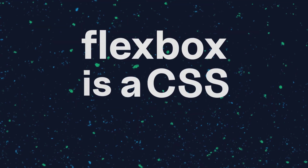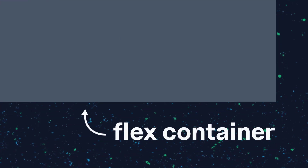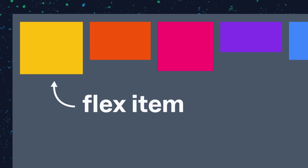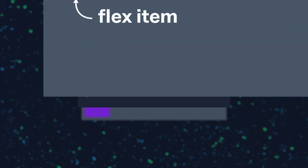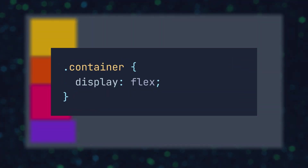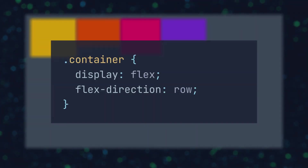Flexbox is a CSS layout method that's divided into two primary components: the Flexbox container and its contents, which are referred to as flex items. You define Flexbox on an element by setting the CSS display property to flex. You'll notice that the elements are now positioned left to right on a single row, because the CSS property flex-direction has a default value of row.